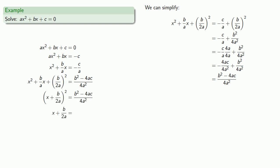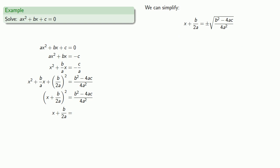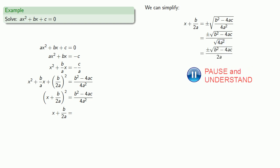Now we have a square equal to an expression, so we can take the square root of both sides. On the left-hand side we'll have x plus b over 2a. On the right-hand side we'll have plus or minus the square root of b squared minus 4ac over 4a squared. Since 4a squared equals 2a quantity squared, the square root of 4a squared is 2a. So the right-hand side simplifies to plus or minus the square root of b squared minus 4ac, all over 2a.